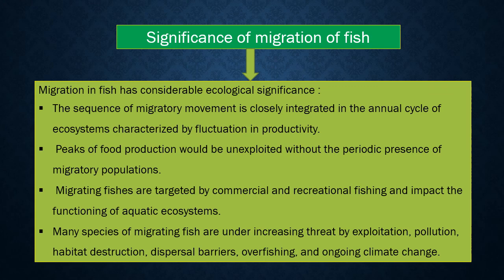Migration in fish has considerable ecological significance. The sequence of migratory movement is closely integrated in the annual cycle of ecosystems characterized by fluctuation in productivity. Peaks of food production would be unexploited without the periodic presence of migratory populations. Migrating fishes are targeted by commercial and recreational fishing and impact the functioning of aquatic ecosystems. Many species of migrating fish are under increasing threat by exploitation, pollution, habitat destruction, dispersal barriers, overfishing, and ongoing climate change.